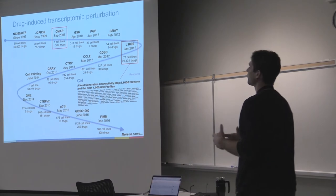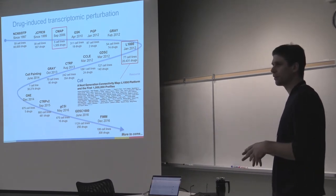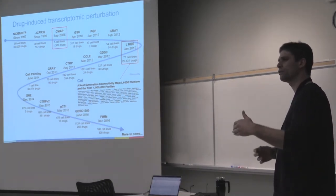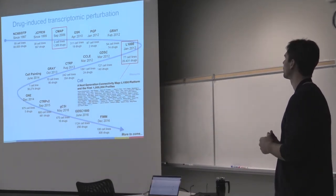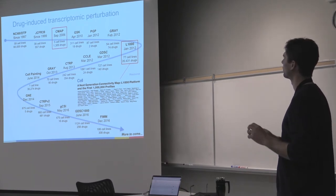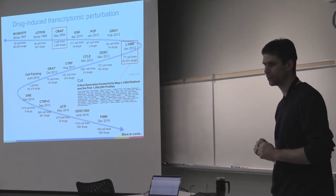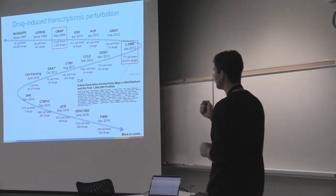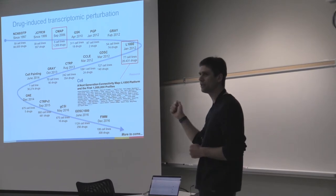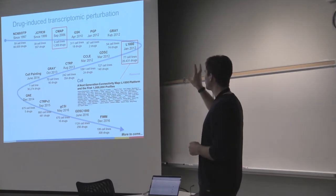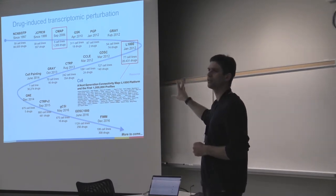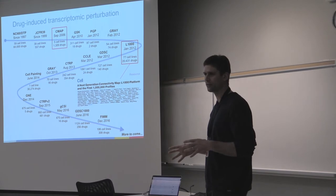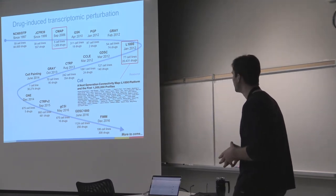So the first type of data I would like to discuss, in addition to drug structure, is what we call drug-induced transcriptome perturbation. That's exactly what the Connectivity Map is doing. They have a new generation called L1000. What they've done is invent a new chip that can measure the expression of 1,000 genes.